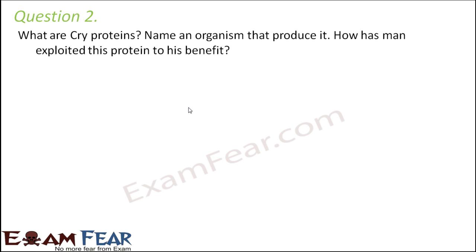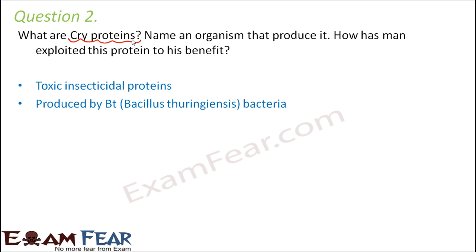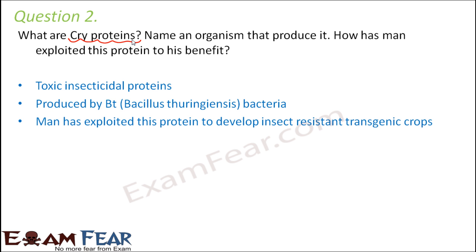Question number 2: What are cry proteins? Name an organism that produces them. Cry proteins are those proteins which help in the synthesis of Bt toxin. They are toxic insecticidal proteins — poisonous proteins that can kill insects. One organism that produces them is Bt, that is Bacillus thuringiensis bacteria.